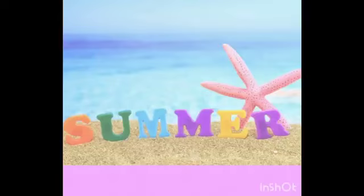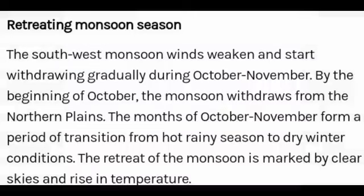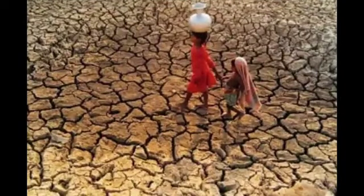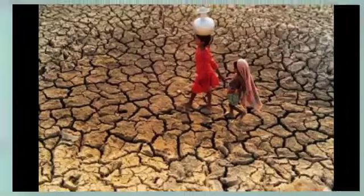The southwest monsoon winds weaken and start withdrawing gradually during October to November. By the beginning of October, the monsoon withdraws from the northern plains. October to November forms a period of transition from the hot rainy season to dry winter conditions. The retreat of the monsoon is marked by clear skies and rising temperatures, as seen in the picture of the retreating monsoon season.